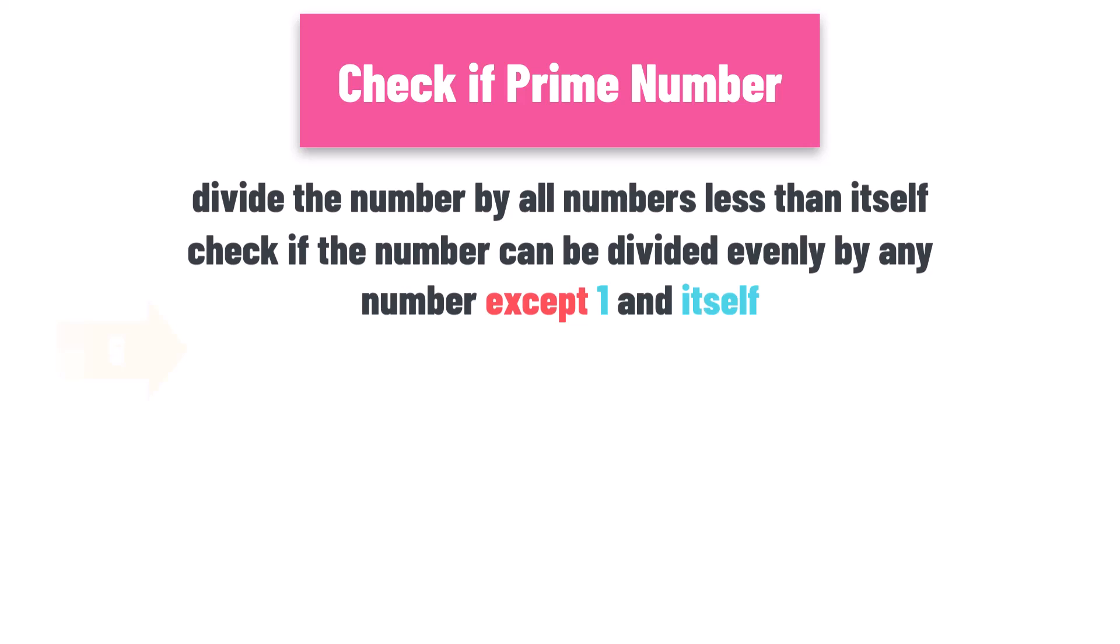For example, if we want to check if the number 5 is a prime number, we have to divide it by all numbers from 1 to 5. Let's do that step by step.